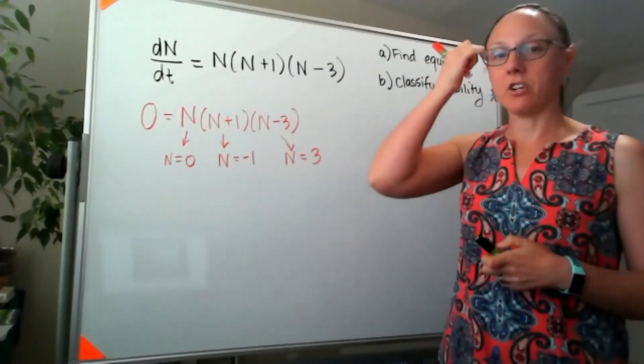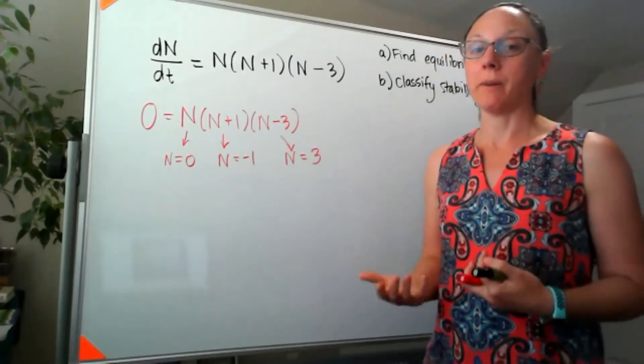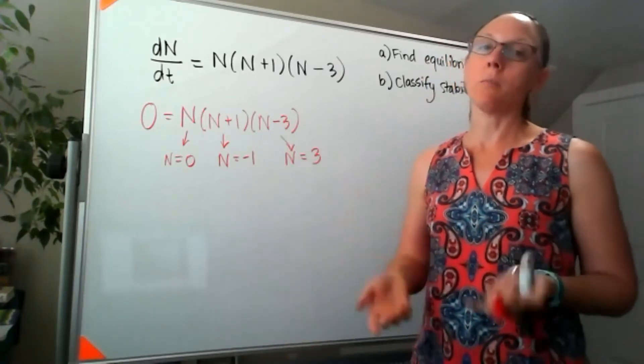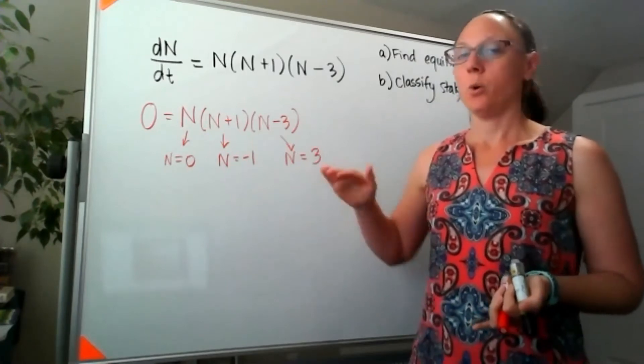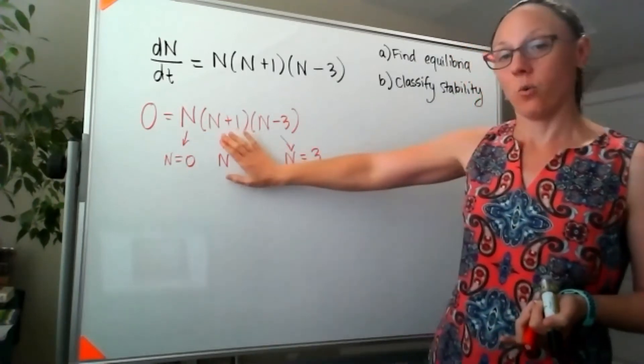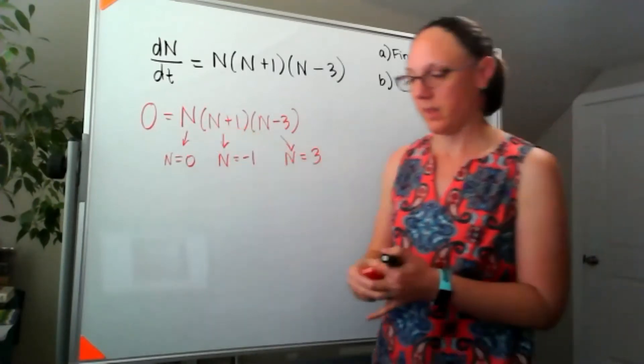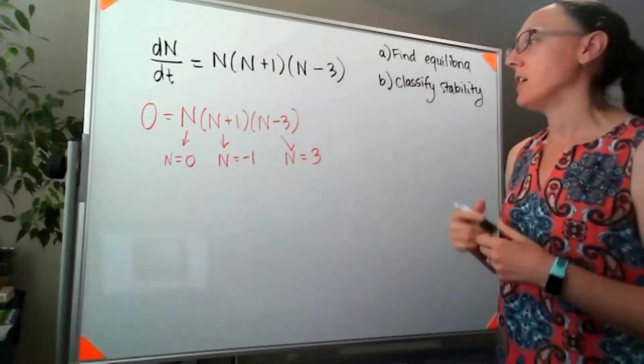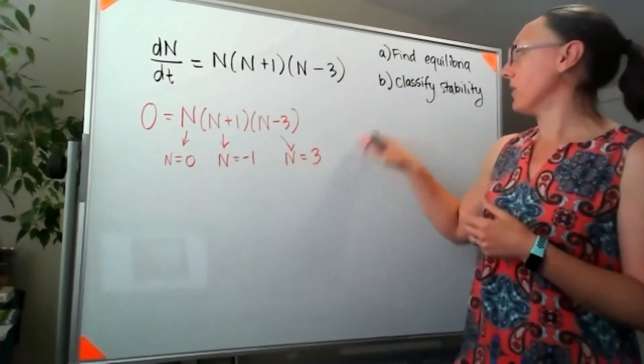Depending on what this differential equation is modeling, it might make sense to include negative numbers, or it might not. So anytime we're talking about a population, we're generally going to ignore the negative number. In this case, let's just explore the whole thing. So we found our equilibria.